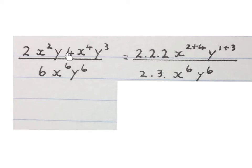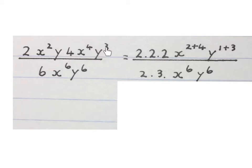The next expression looks like this. Firstly we prime factorize all the numbers: the 4 becomes 2 squared and the 6 becomes 2 times 3. We finish the top first, then the bottom, and then we divide them into each other later. We take x squared times x to the power of 4 — I add the exponents. Take y to the power of 1 times y to the power of 3 — I add those exponents. Then I keep the bottom and prime factorize the 6.